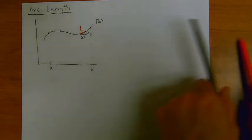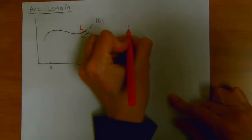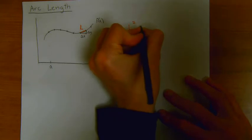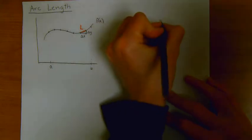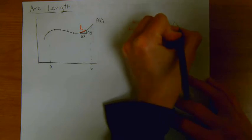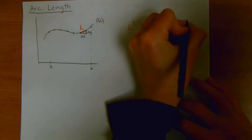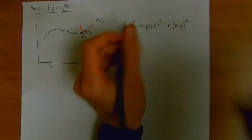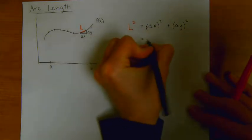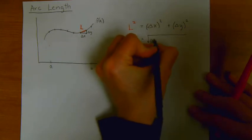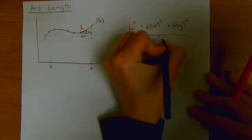So let's write Pythagorean theorem over here. That means that L squared is going to be equal to delta x squared plus delta y squared. And I can rewrite that as L being equal to the square root of delta x squared plus delta y squared.